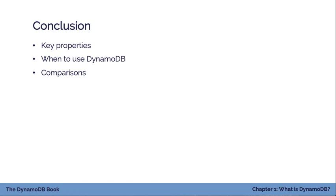That concludes chapter one. We started off with those five misconceptions about DynamoDB and walked through some of the falsehoods you might have heard. Then we covered three main areas: number one, the key properties and characteristics of DynamoDB and what makes it distinct from other database options; second, when to use DynamoDB — hyperscale applications, serverless with hyper ephemeral compute, but really DynamoDB is quite flexible and works for a wide variety of applications; and finally, comparisons to other databases from relational databases to MongoDB to Cassandra. In the next chapter, we're going to cover basic terminology and concepts of DynamoDB so we can lay the foundation for proper data modeling with Dynamo.